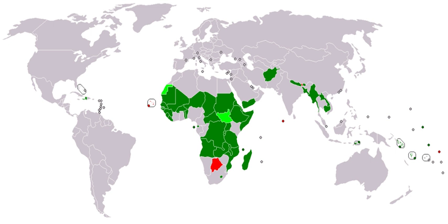Developing countries include, in decreasing order of economic growth or size of the capital market: newly industrialized countries, emerging markets, frontier markets, and least developed countries. Therefore, the least developed countries are the poorest of the developing countries.